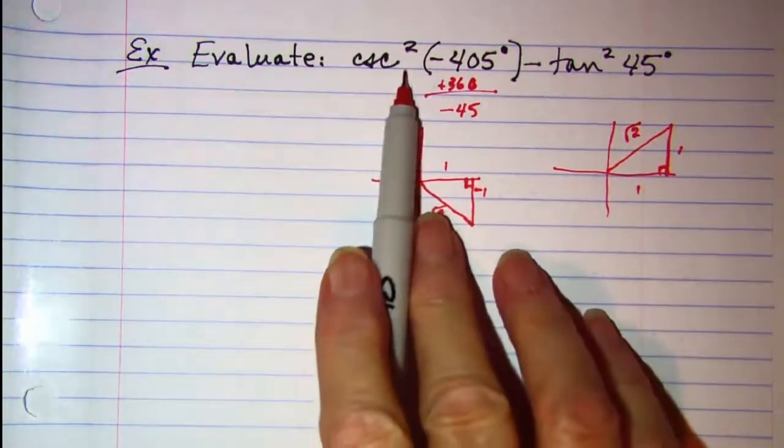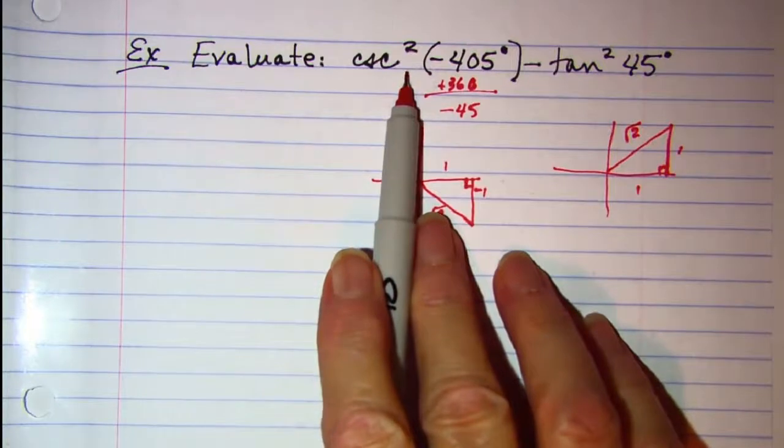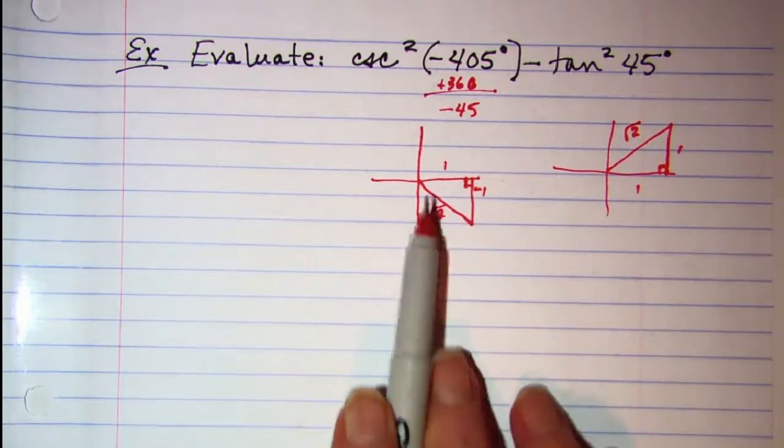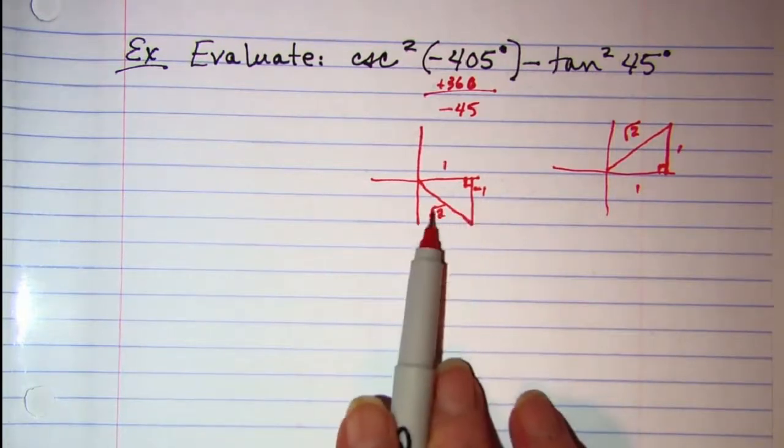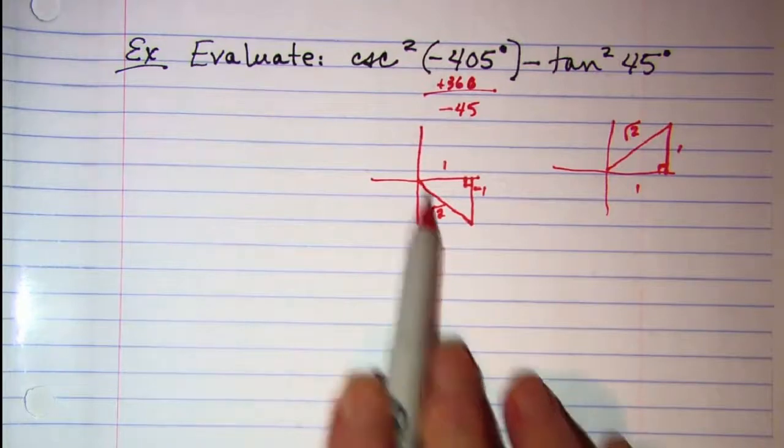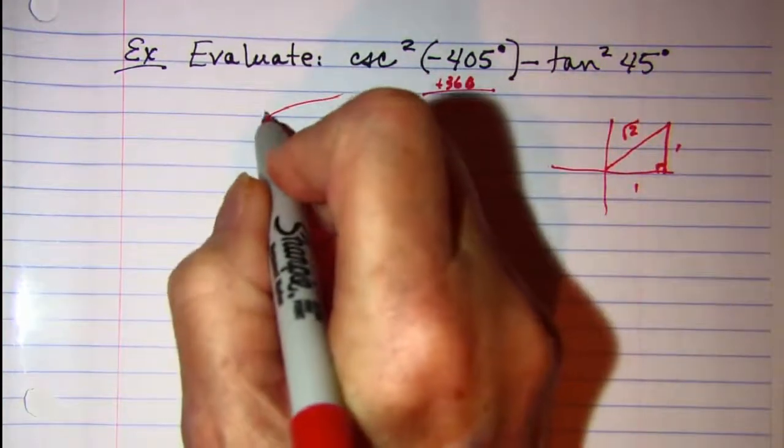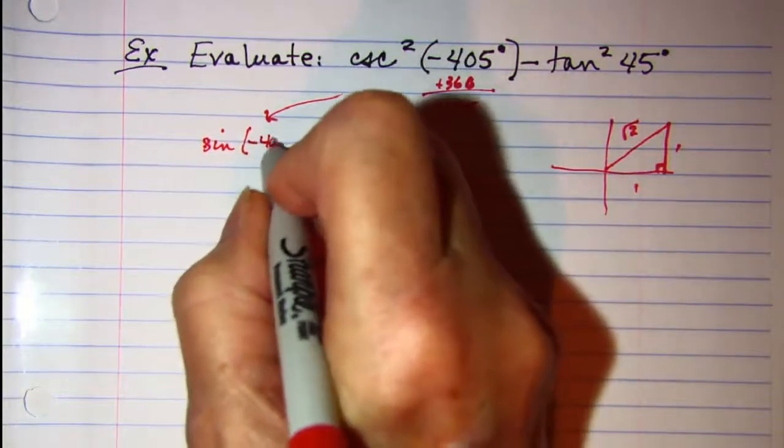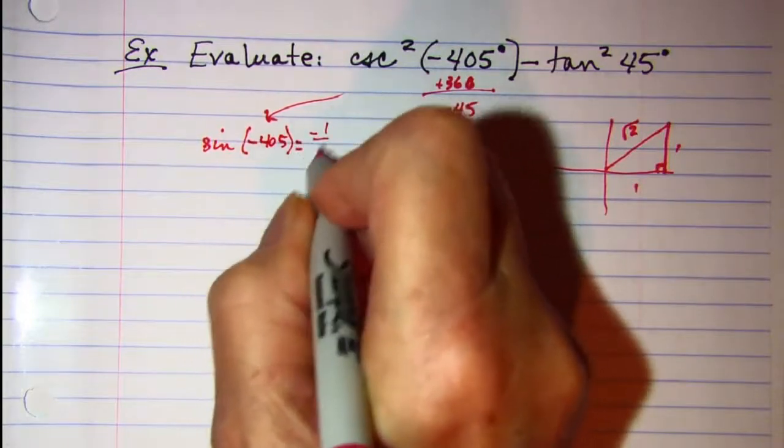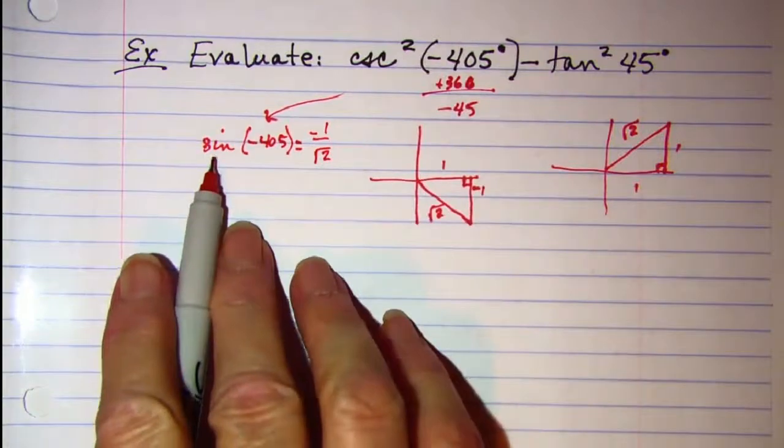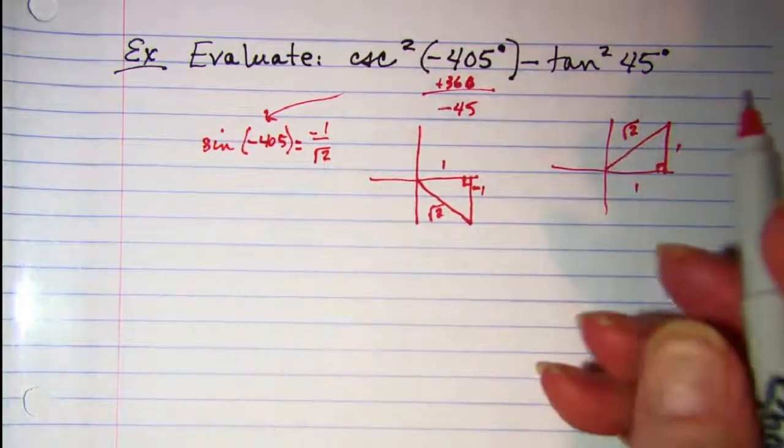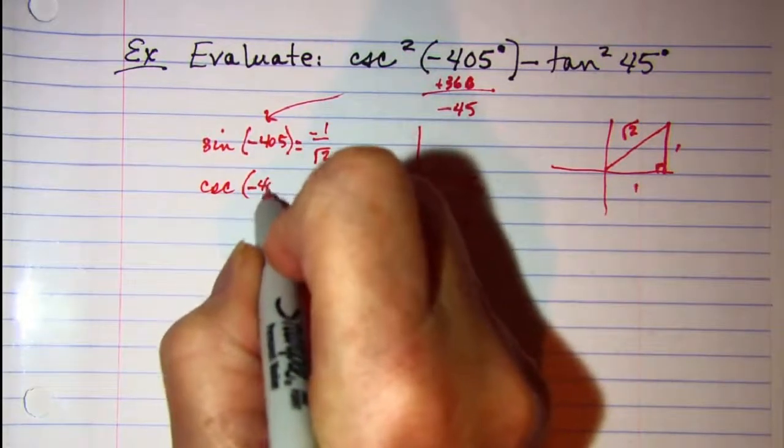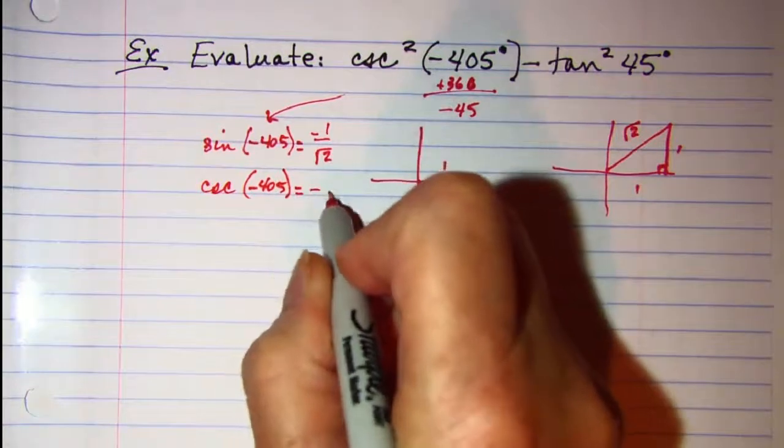Now cosecant is the reciprocal of sine. So if I find the sine here, I have opposite over hypotenuse, so negative 1 over √2. So if the sine is negative 1 over √2, then the cosecant will be negative √2 over 1.